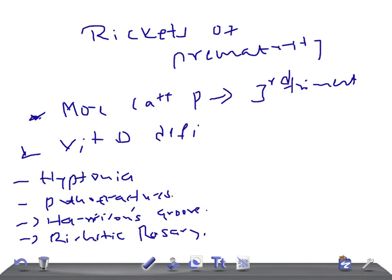These are the important clinical signs and symptoms of rickets of prematurity. Diagnosis is based on X-ray. Look for cupping and fraying of the metaphysis. You should Google images of rickets of prematurity to see the X-rays.